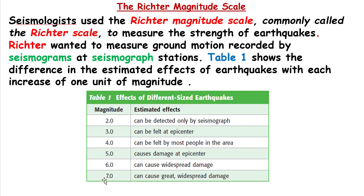What about the last level — magnitude 7? It can cause and destroy cities, houses, or trees. This is the last level according to the Richter magnitude scale.